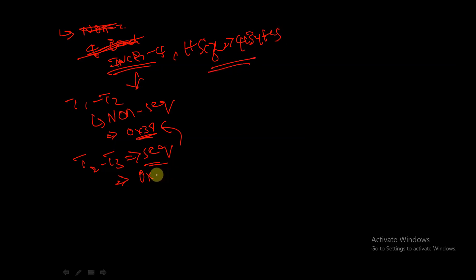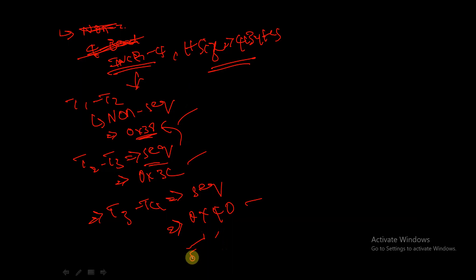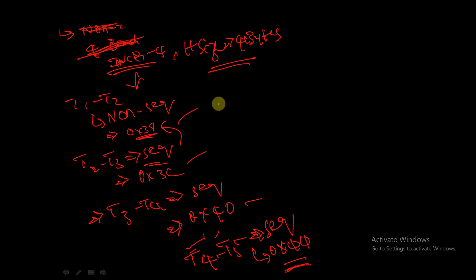So it will increment from 0x38 to 0x3C. In clock cycle T3 to T4, it is also sequential, so it will depend upon the previous address and increment to 0x40. In clock cycle T4 to T5, it is also a sequential transfer, so the address increments to 0x44. Total 4 beats have been completed.